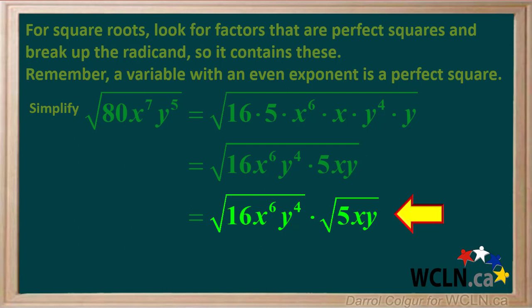So now we have the product of these two square roots. Taking the square roots of the perfect squares — 16x to the 6th y to the 4th — gives us 4x cubed y squared.